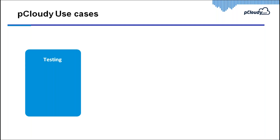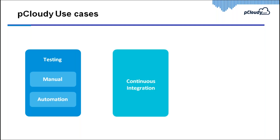The first use case is of course testing, which most customers use P Cloudy for — both manual testing and automation. The second use case is continuous integration: if you have a CI/CD pipeline, P Cloudy is a perfect fit because you can use remote devices to run test automation, regression tests, or unit tests, plugged into your CI pipeline. But today's webinar is about the next use case — developers.